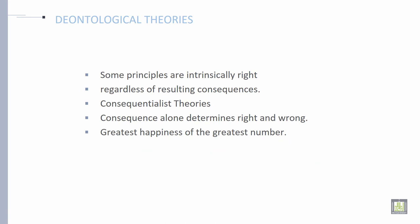Then, deontological theories: some principles are intrinsically right regardless of resulting consequences. Then consequentialist theories: consequences alone determine right and wrong, and the greatest happiness of the greatest number.